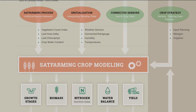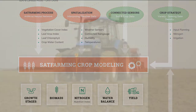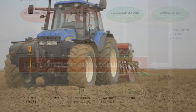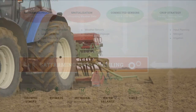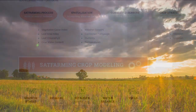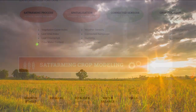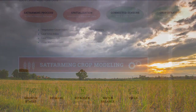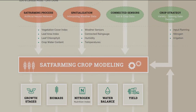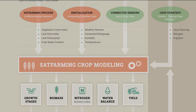The crop model is a set of mathematical equations which mimics all the plant life processes. These are the interactions between the plant, the climate, and the soil. It will need information from the local weather data station and possibly from field-connected sensors like temperature, rainfall, solar radiations, and air and soil humidity.